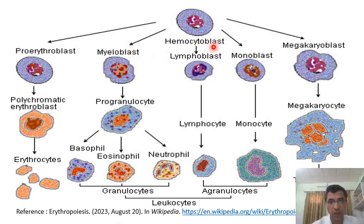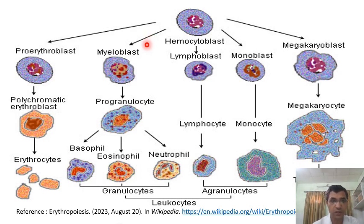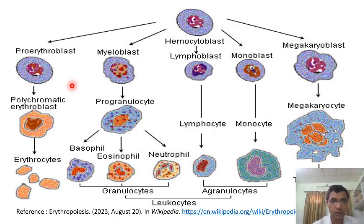Here you will see that this hemocytoblast is again subdivided into another set of stem cells with the help of some mitogens — such as the proerythroblast, myeloblast, lymphoblast, monoblast, and megakaryoblast.